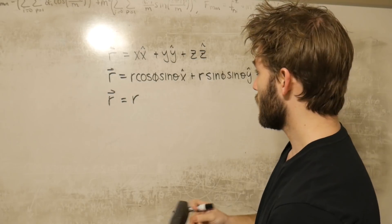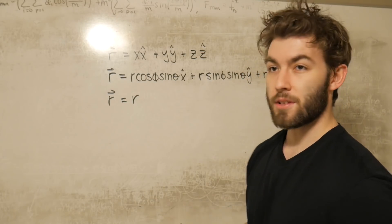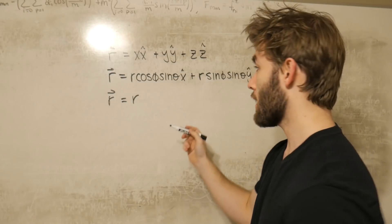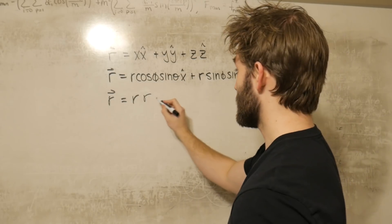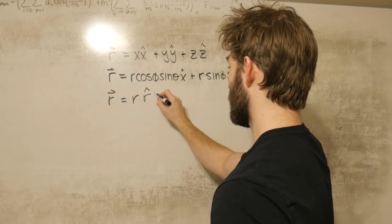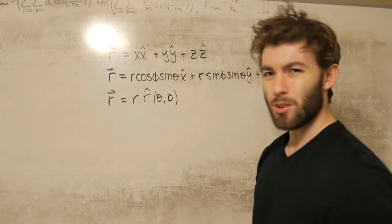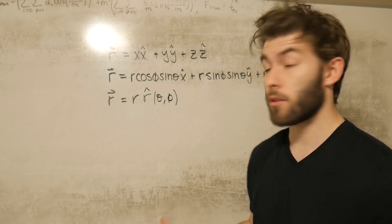And what I'm going to do here is I'm going to say that each of these can be expressed as some function of theta and phi. So r is going to be written as some scaling factor r times a unit vector r that is a function of both theta and phi. This looks a little abstract at the moment, but it will all come together later.